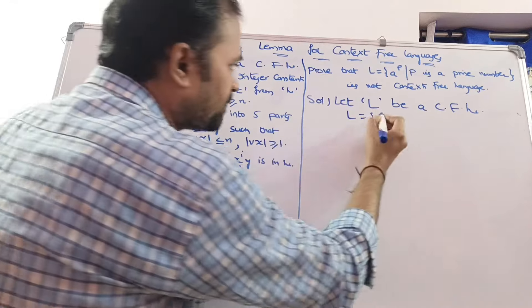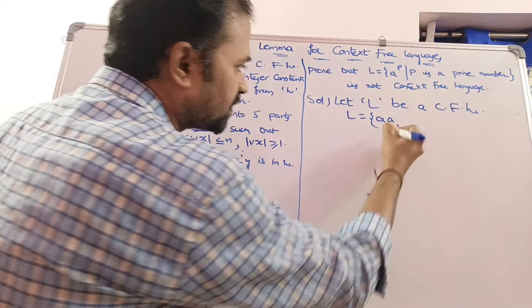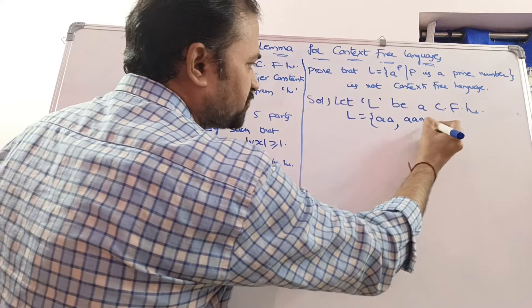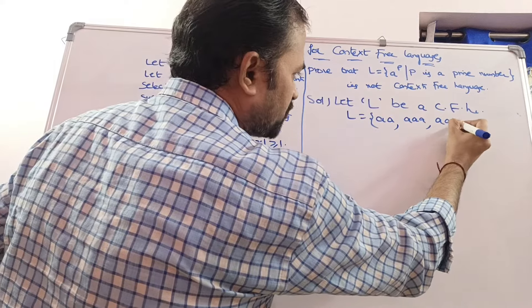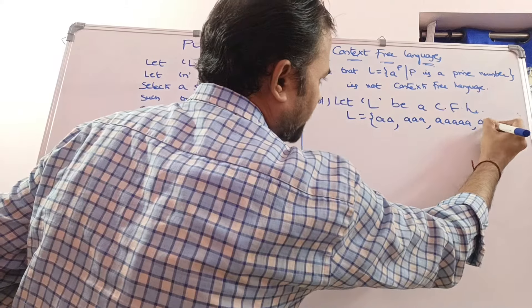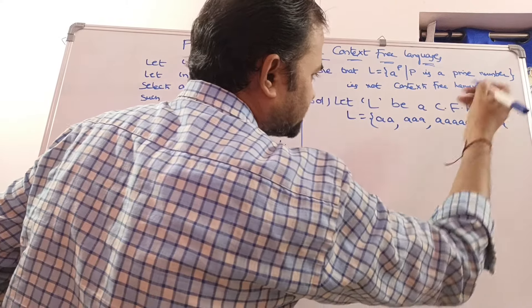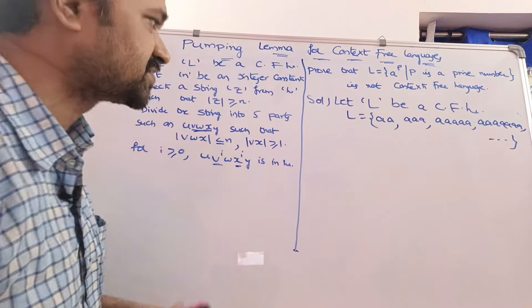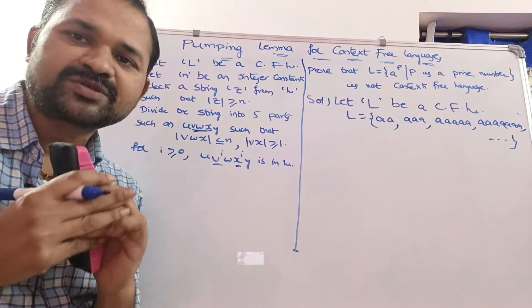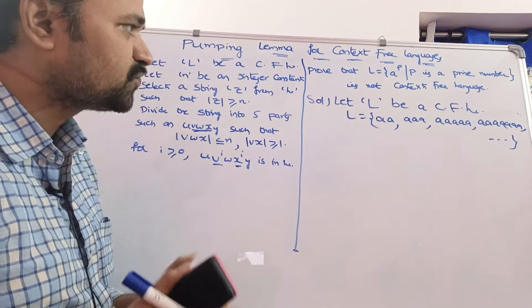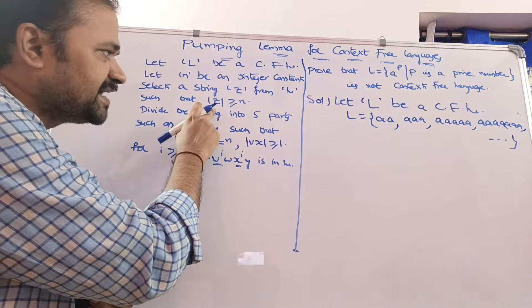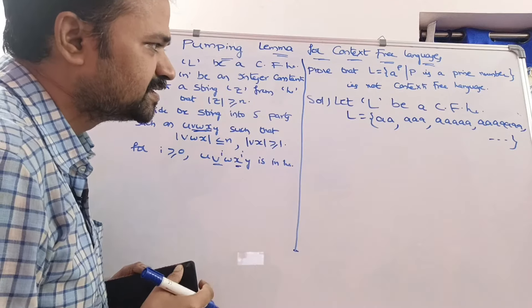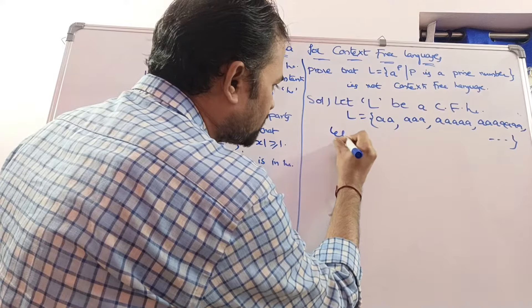The prime numbers give us strings like: a^2 (2 a's), a^3 (3 a's), a^5 (5 a's), a^7 (7 a's), and so on. We need to select n such that |z| ≥ n. Let n = 5.